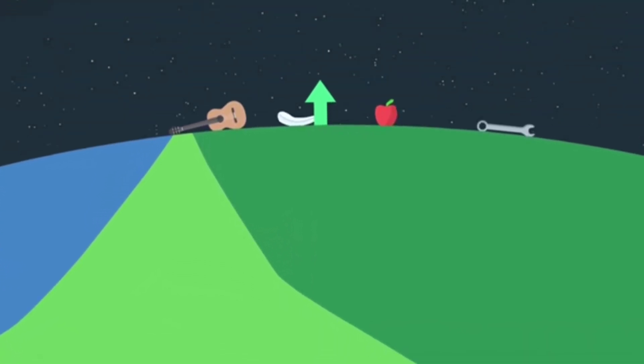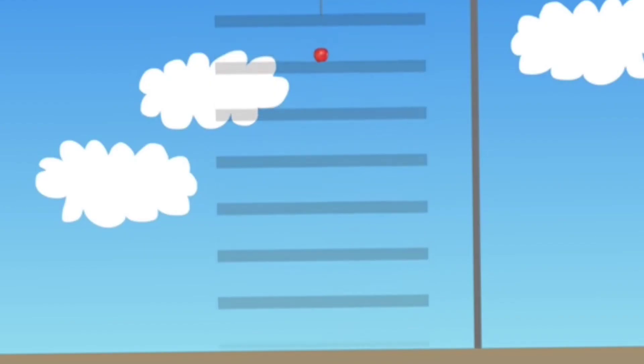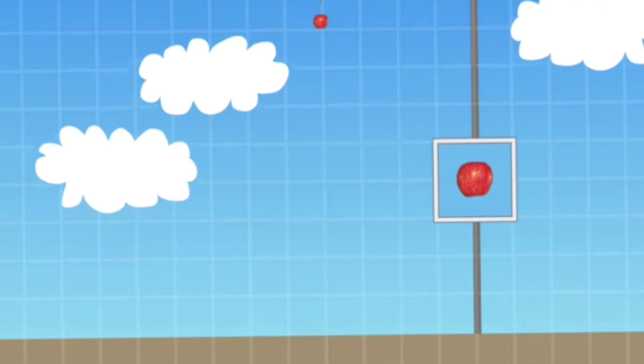What? Hey Sanjay, what the hell you are telling? How is it possible? The apple is falling down, the apple is falling down. That's why we call Einstein a genius.